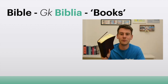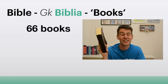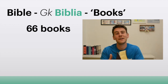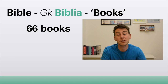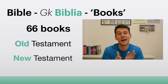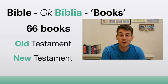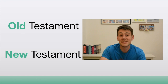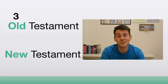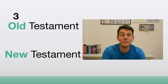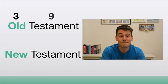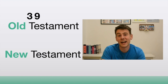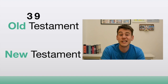There are actually 66 different books contained within the Bible, and it's split into two main parts: the Old Testament and the New Testament. If you wanted to remember how many books are in the Old Testament, take the number of letters in the word 'old' — that's three — and the number of letters in 'testament' — that's nine. Put them together and you've got 39.